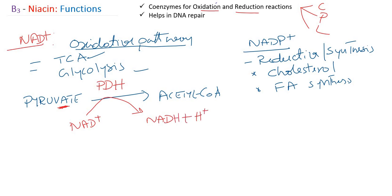Since NAD+ already carries a positive charge, it can accept only one electron, plus one more hydrogen atom, becoming NADH. The extra proton is then released into the medium. This is the specific example for the oxidative pathway.